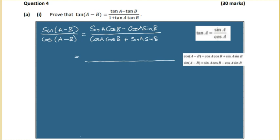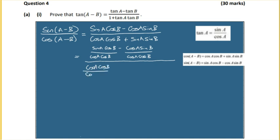So the numerator becomes sin(a)cos(b) - cos(a)sin(b), all over cos(a)cos(b). And the denominator becomes cos(a)cos(b) divided by cos(a)cos(b), giving us 1, plus sin(a)sin(b) over cos(a)cos(b).